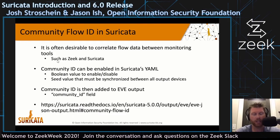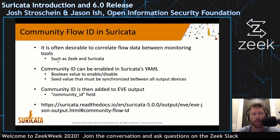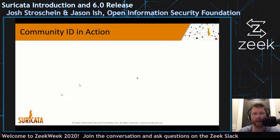One of the most relevant integrations for today's talk is Community Flow ID. It is often desirable to correlate flow between different monitoring tools — a great example is between Zeek and Suricata. On the Suricata side, you can enable community ID in Suricata's YAML — it's simply a Boolean value you switch from enabled to disabled. You also have to input a relatively arbitrary seed value, which you then synchronize between the output devices. The community ID field is then added to the EVE output.